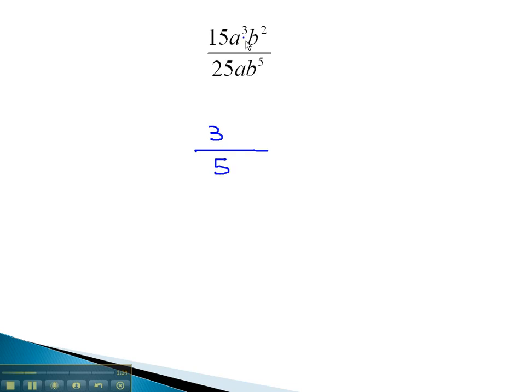As for the a's, there are 3 in the numerator and 1 in the denominator. When we subtract those exponents, 3 minus 1 is 2, and because it's positive, it stays on top in the numerator.